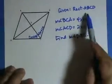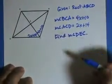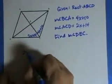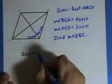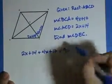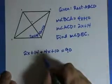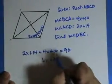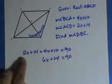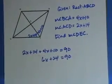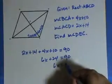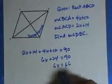What's the relationship of these two angles in a rectangle? Well, they add up to 90. So that's going to be 2x plus 14 plus 4x plus 10 equals 90. 6x equals 66. X equals 11.